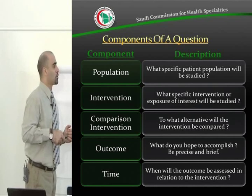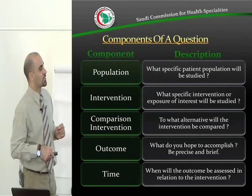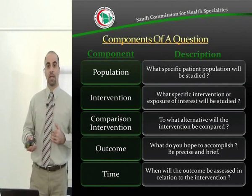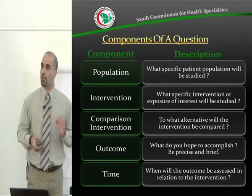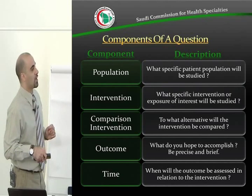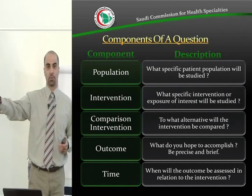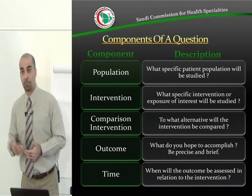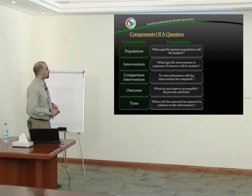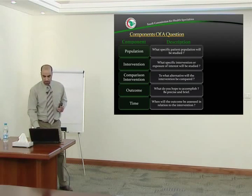The outcome is very important to be clarified in the research question. What do you hope to accomplish? Be precise and brief. Am I looking at mortality, at survival, at quality of life, at hypertension as an outcome, and so on. So you have to identify in the research question what you are looking for. And of course the time — when will the outcome be assessed in relation to the intervention? Are you going to do a follow-up? Are you checking survival after five years, three years, or ten years? These are components that are very important to be incorporated in the research question when it is structured.